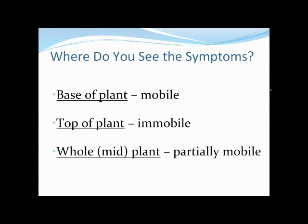There are also elements that are partially mobile — not very efficient at being moved, but they can be moved. You sometimes see symptoms in the middle of the plant or throughout the whole plant. The important thing is to be honest about where you first saw the symptom start — not where it is two weeks later, when it's probably worked its way through the whole plant. When did you first see those symptoms and where did they start? That's the key.